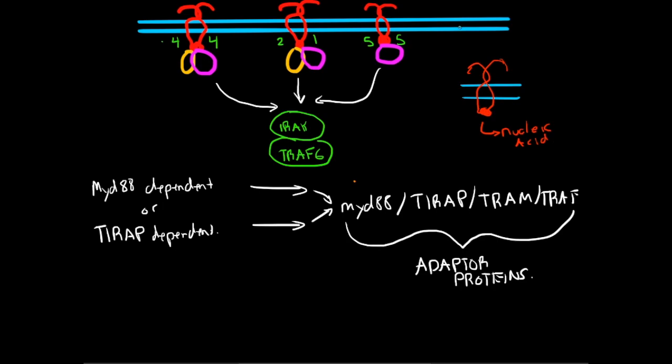TLRs on the surface will recognize pathogens or surface structures on pathogens on the cell surface, whereas the inside will recognize viral proteins, viral DNA, viral single-stranded and double-stranded RNA, and stuff like that.